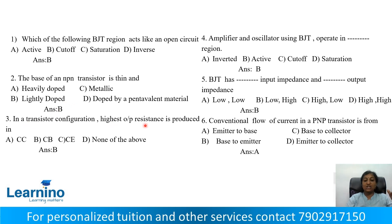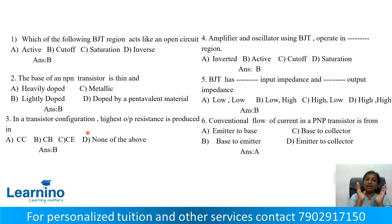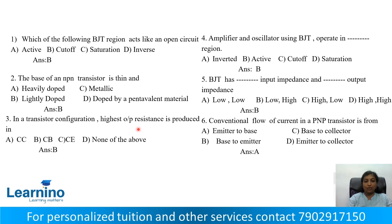Question number 3: Which transistor configuration produces the highest output resistance? Transistor configurations include common base and common emitter. There are many parameters to compare. The highest output resistance — correct answer is Option B.